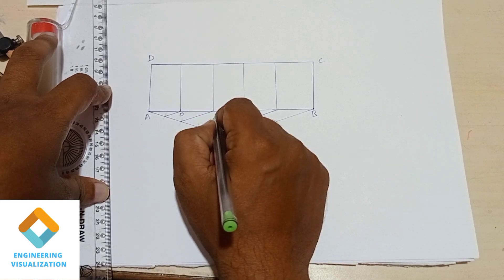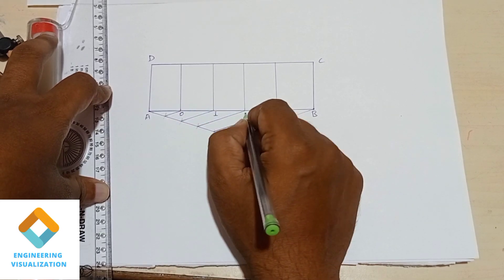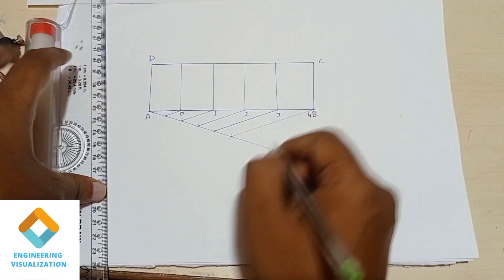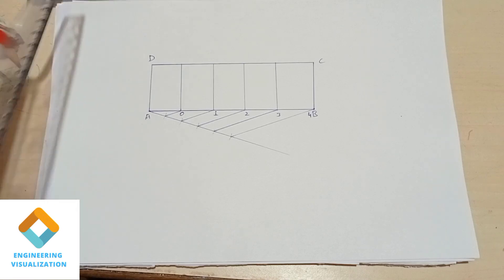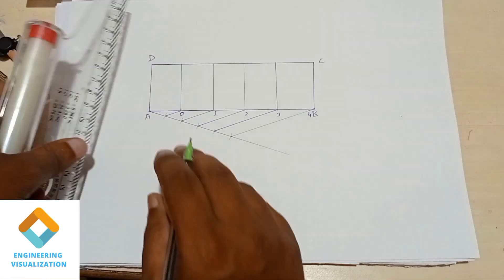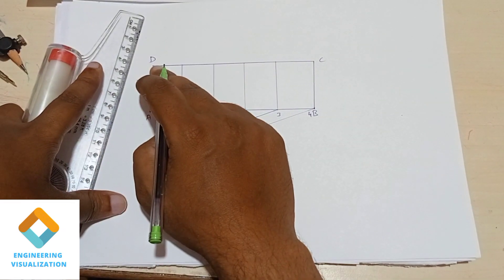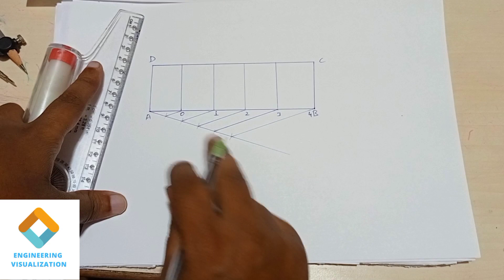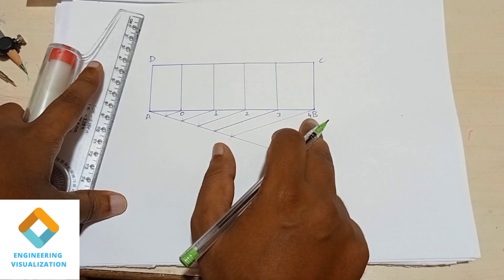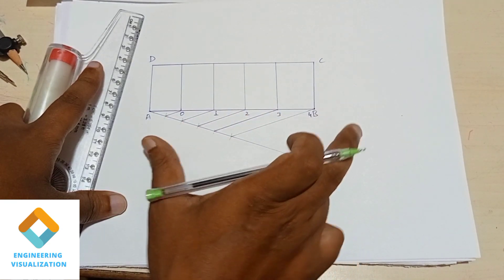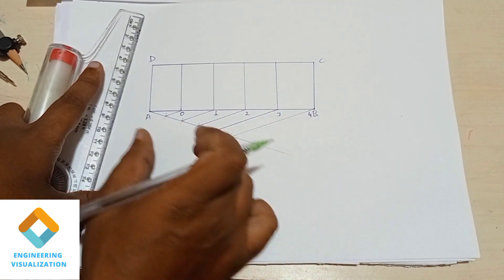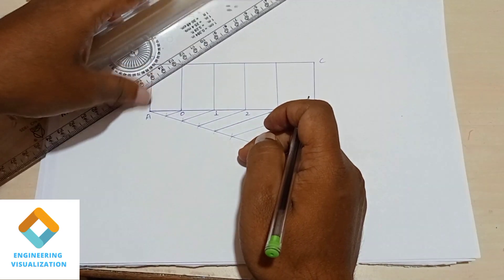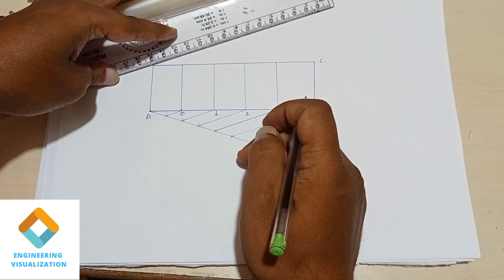We can mark this as 0, 1, 2, 3, and 4. Each of the parts is of length 10 meters — so 10, 20, 30, 40, 50 meters total. It is a 50 meter scale.